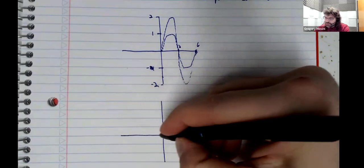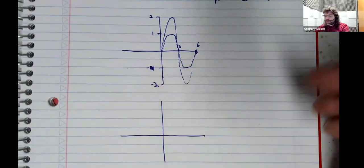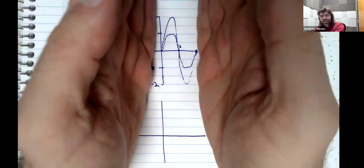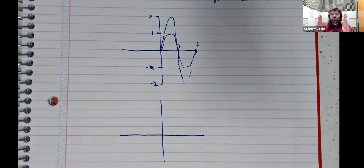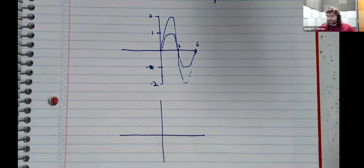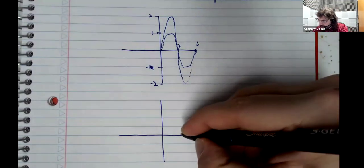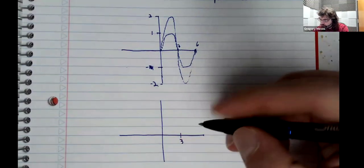So that tells us that we have to take this graph, this curve, and smush it together. It's currently spread out over about six units. We need to smush it down so it's spread out over about three units. So here's three.